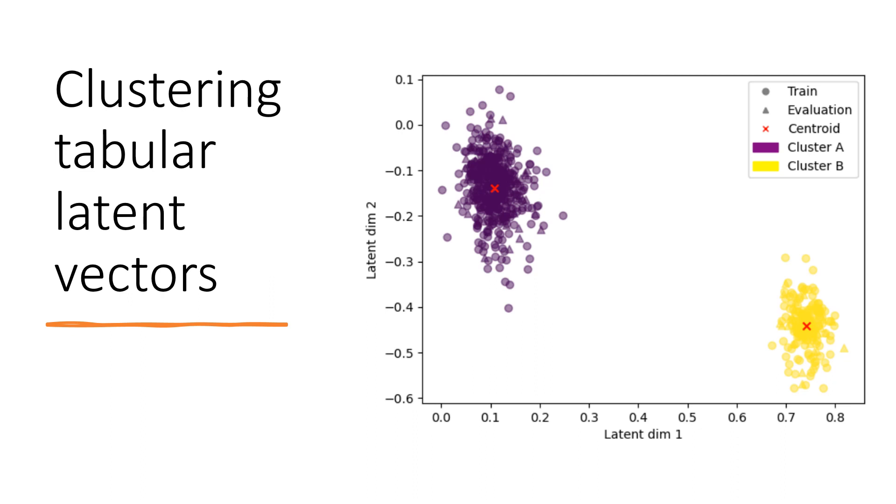We have successfully trained such model on the tabular data of COLO 661. Cluster analysis, shown in this plot, identified two distinct patient clusters, shown in purple and yellow.